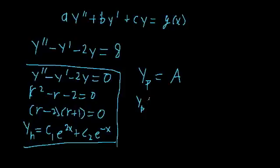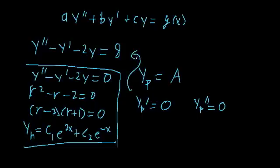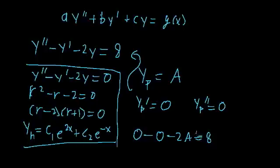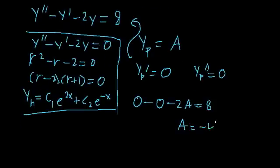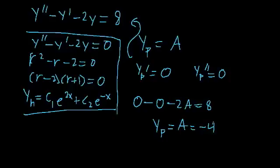Let's take the derivatives. y_p' is the derivative of a constant, which is 0. The second derivative is also 0. Plugging all of these values into the differential equation, we get 0 - 0 - 2a = 8, which means a = -4. Since a was our guess at a particular solution, y_p = -4 is a particular solution to this differential equation.